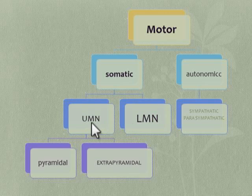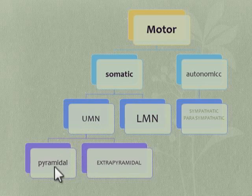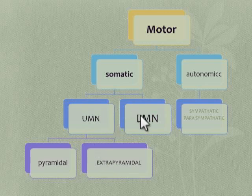Upper motor neurons are those that arise from the brain or cerebrum and end in the anterior horn of the spinal cord. They are of two types: pyramidal tract and extra-pyramidal tract. The pyramidal tract controls voluntary muscular activity, and the extra-pyramidal tract controls involuntary muscular activity and maintenance of posture and tone of the muscles. Lower motor neurons are nerve fibers that start from the spinal cord, ganglia, or nucleus and end in the neuromuscular junction.